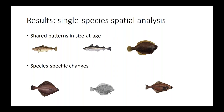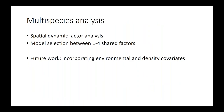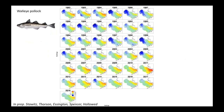We took the four species with shared trends and put them into a multi-species analysis—spatial dynamic factor analysis done in the VAST package that Jim Thorson and others have worked on. We used model selection between one and four shared factors. I haven't yet incorporated covariates into this multi-species analysis, but that's something we want to do in the future for both environmental effects and density.